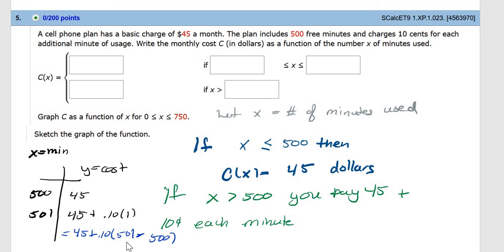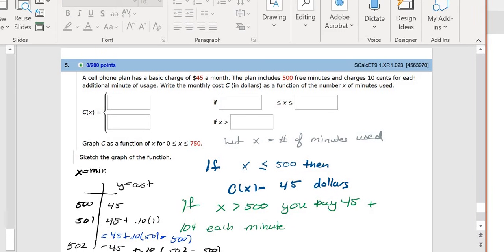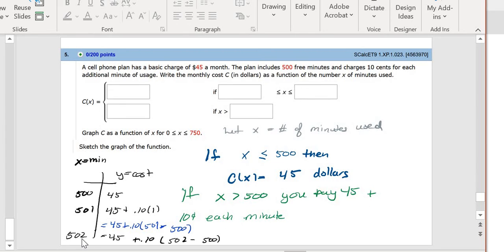I do this again with 502. It's going to be $45 plus 0.10 times two minutes, but two minutes is really 502 minus 500. So I've got to get this 502 involved because that's my x.